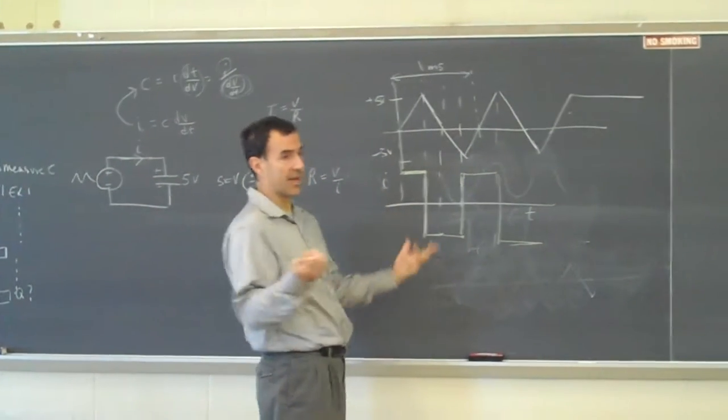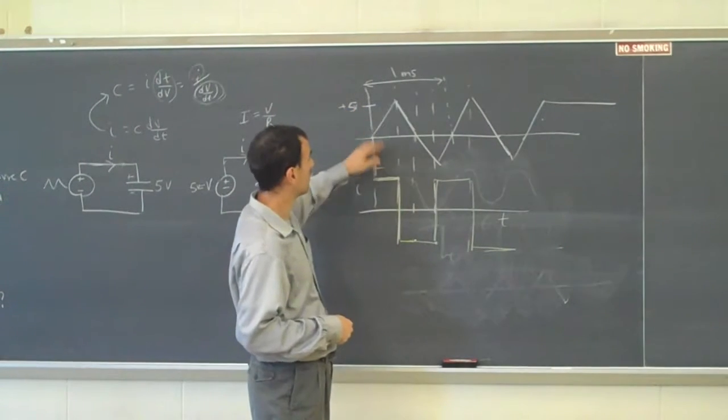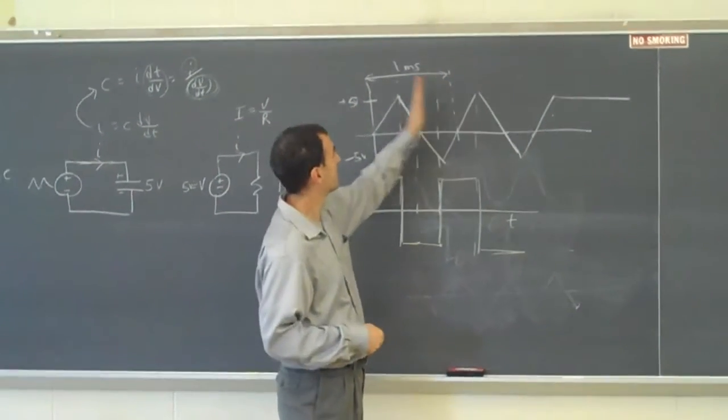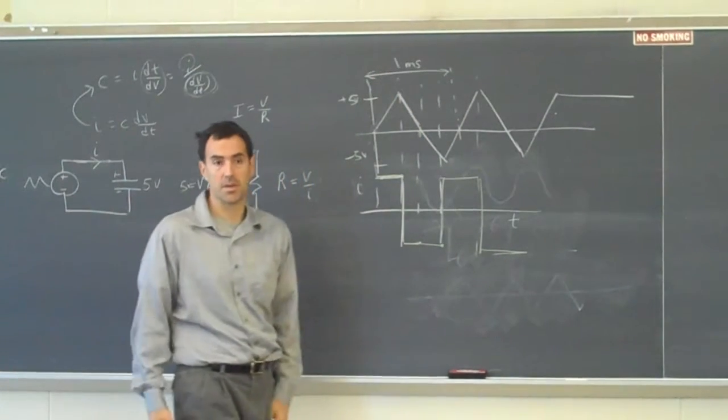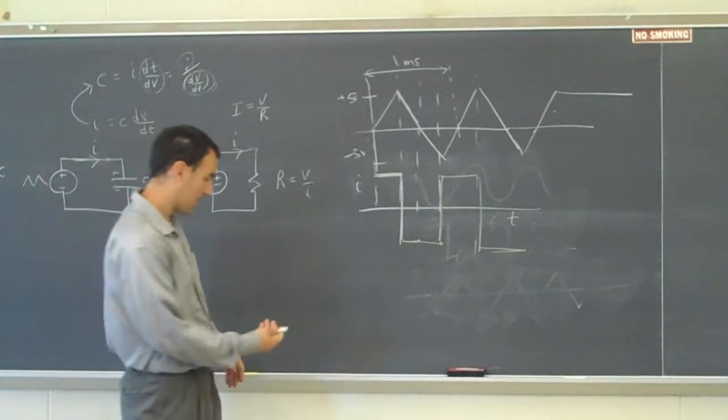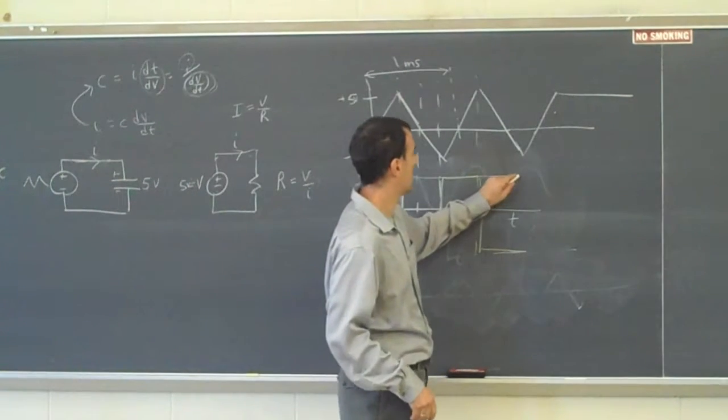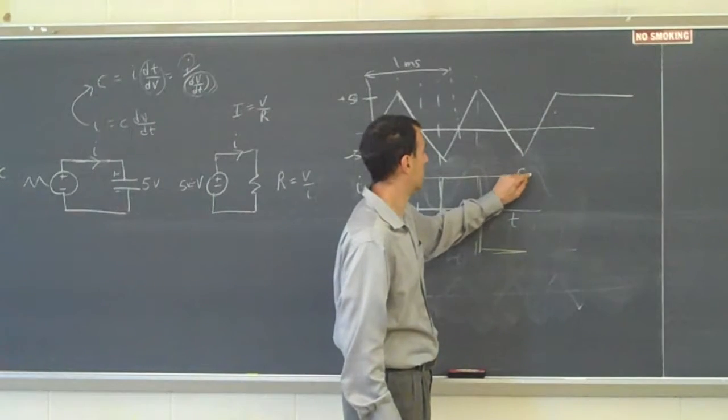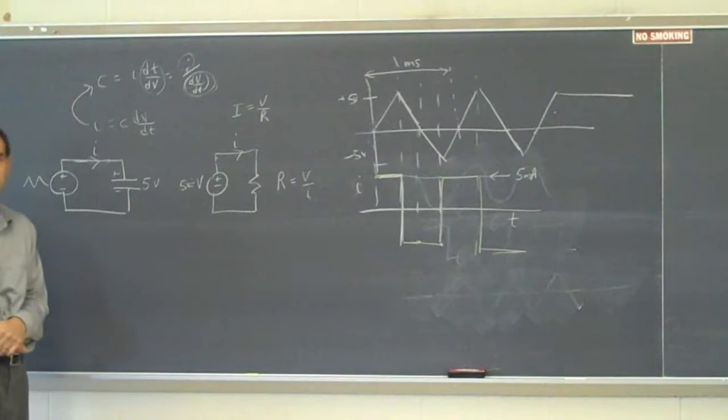Let's actually put some values in here and calculate the capacitance. So this is going from 5 volts to negative 5 volts. That distance on the horizontal axis is 1 millisecond. And suppose I measure my current. Let's say this level right here is 5 milliamps of current. Let's actually calculate the size of this capacitor.